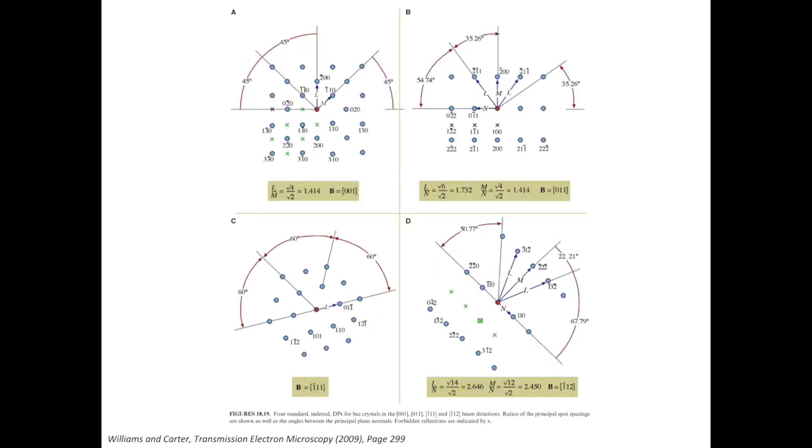This slide shows the example of single crystal BCC diffraction patterns. The diffraction spots have been already indexed. The solid spots you see here, those are the diffraction spots. The green crosses you see here, those are forbidden reflection.